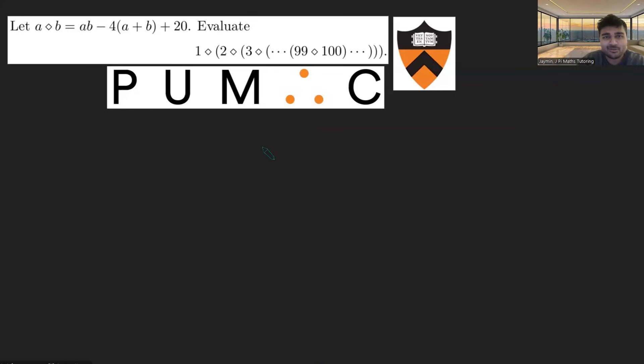I'm going to dive right in. There's a very neat trick to this. Let's firstly examine this diamond product. A diamond B is AB minus 4 times (A plus B) plus 20.